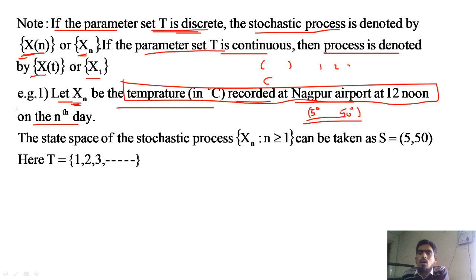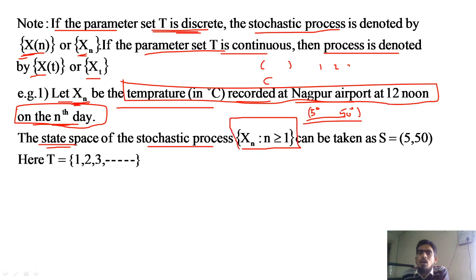n denotes the nth day — first day, second day, third day. So x(n) denotes the temperature on the nth day. The state space — meaning the sample space of the stochastic process — is the set of all possible temperature values. The collection of all these random variables forms the stochastic process.